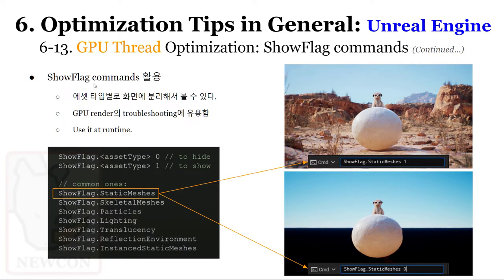Show Flags 커맨드로 show staticmesh 1/0, show skeletalmesh 1/0 등을 통해 static mesh, skeletal mesh, particle 등을 런타임에서 껐다 켤 수 있습니다. static mesh를 끄면 다이나믹 오브젝트(리깅 또는 애니메이션이 들어간 오브젝트)만 표시됩니다.